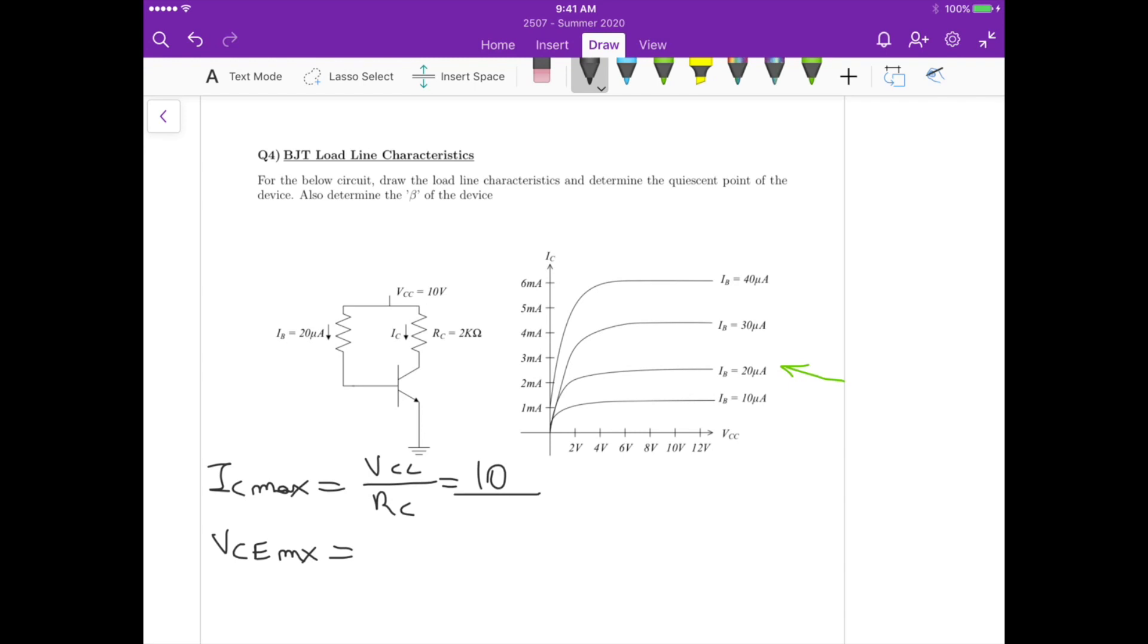Now, when do we have VCE max? What's the maximum value of VCE? We know that the emitter is grounded, so that means E is zero volts. And the maximum value of the collector is going to be when the collector current is actually zero amperes.